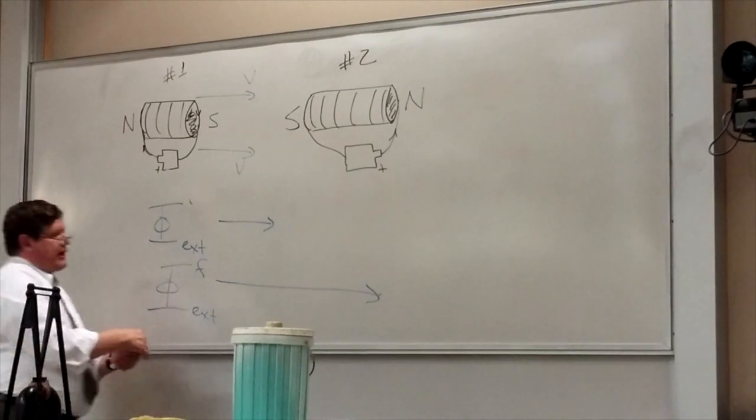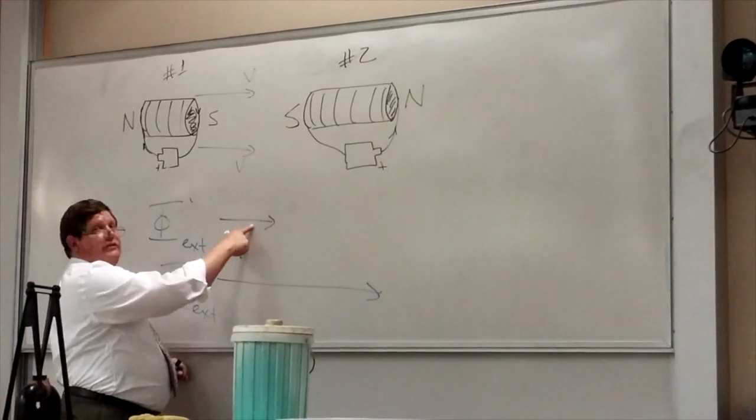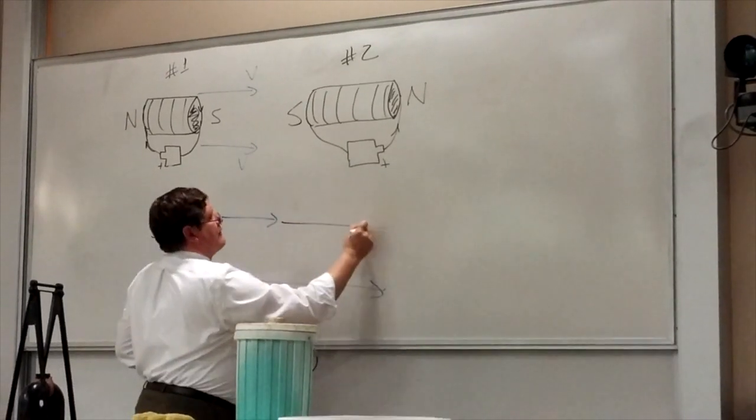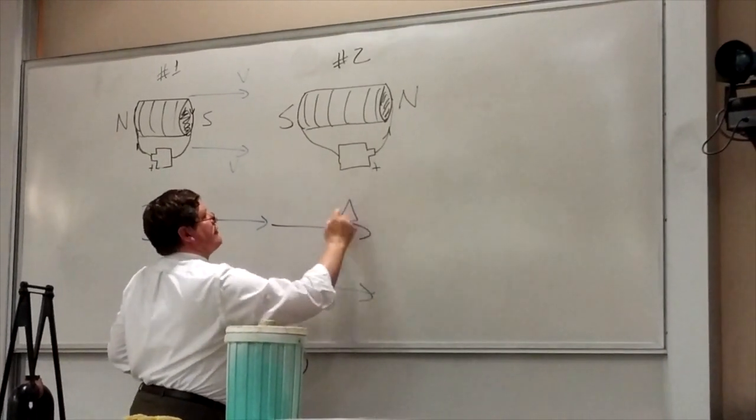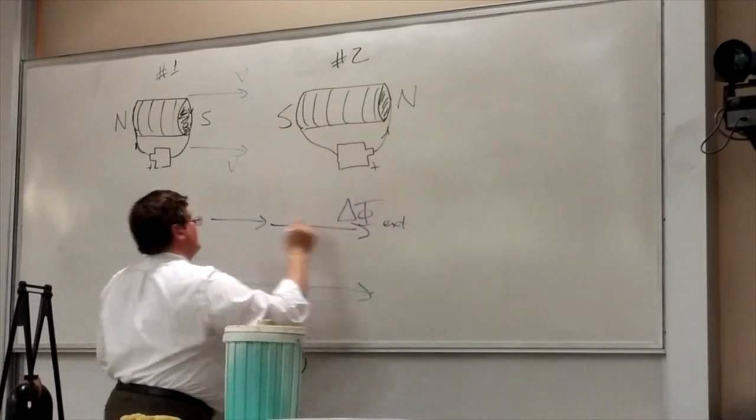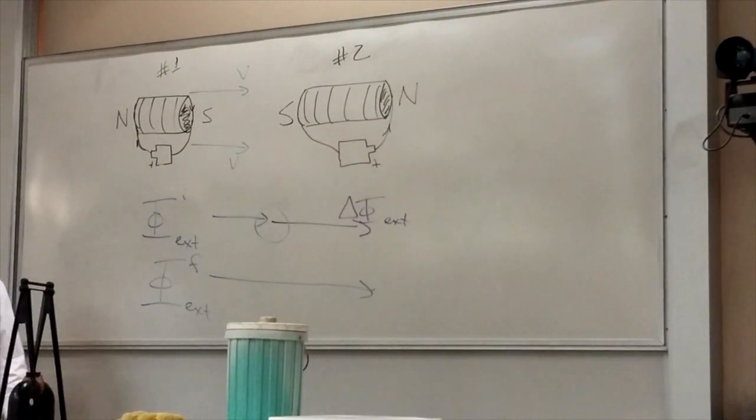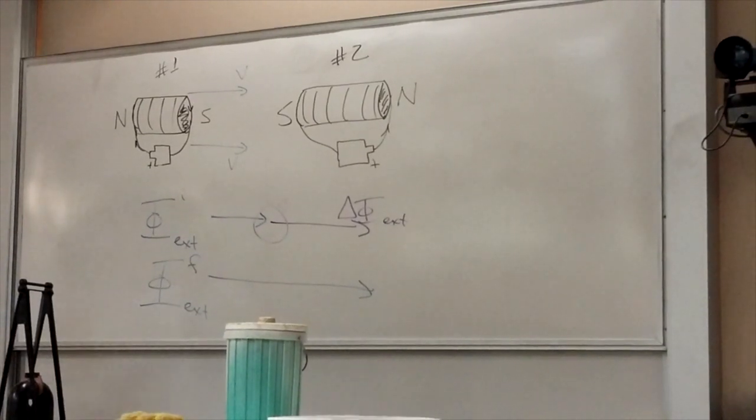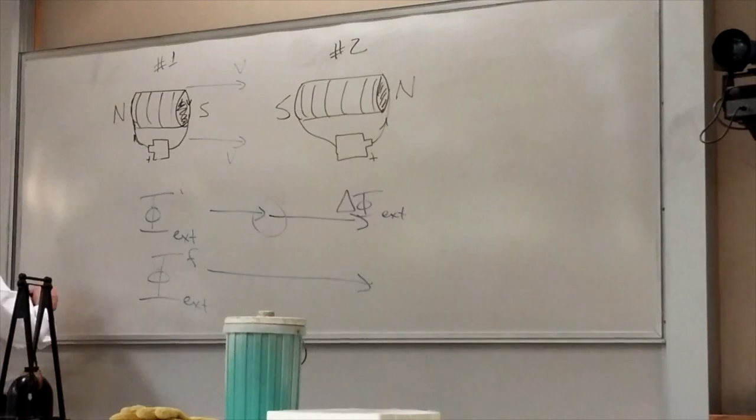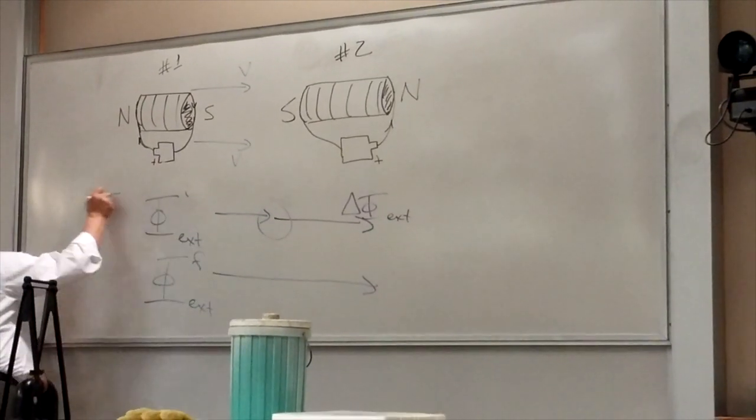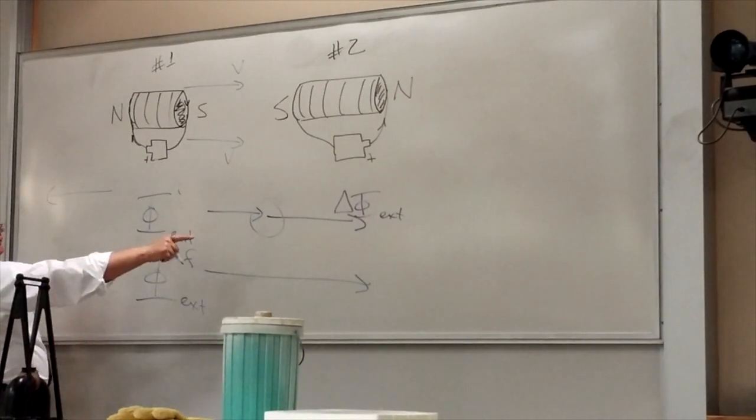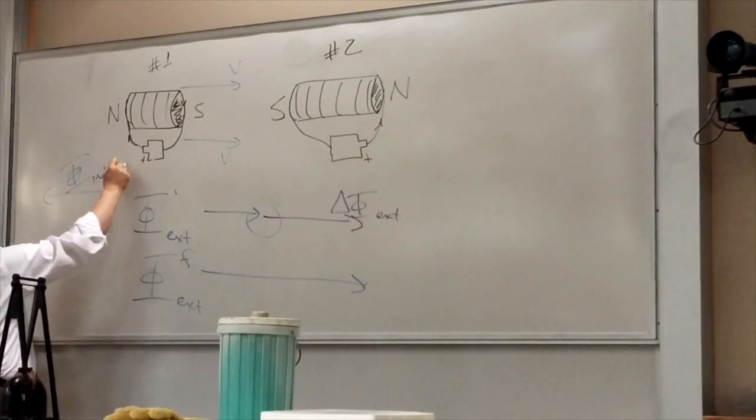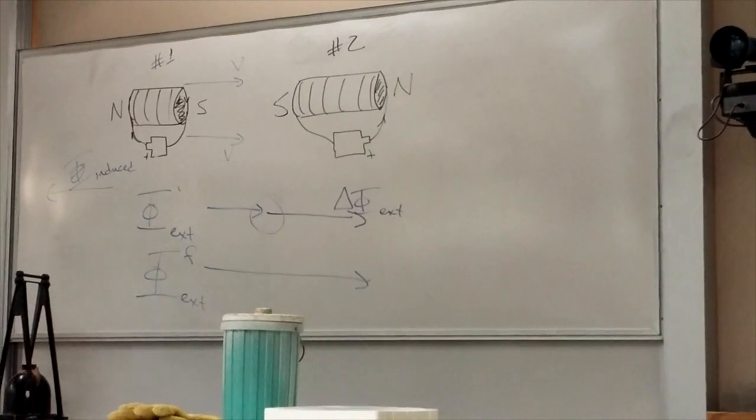Now the change in flux is what I'm interested in. What do I have to add to this initial short vector to get a final long vector? I have to add something in the same direction. We add vectors when we put them tail to head. The induced flux is what fights that change. So if the change is to the right, the induced flux has to point to the left.